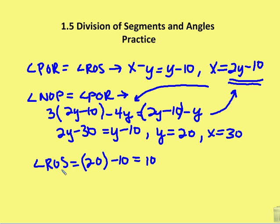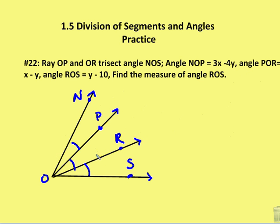I'm asked to find the measure of angle ROS. The equation for ROS is y minus 10. I know y is 20, so I get 20 minus 10, which is 10 degrees. And 10 degrees is the answer for all three angles, because those two rays trisect and divide the larger angle NOS into three congruent angles — 10 degrees, 10 degrees, and 10 degrees.